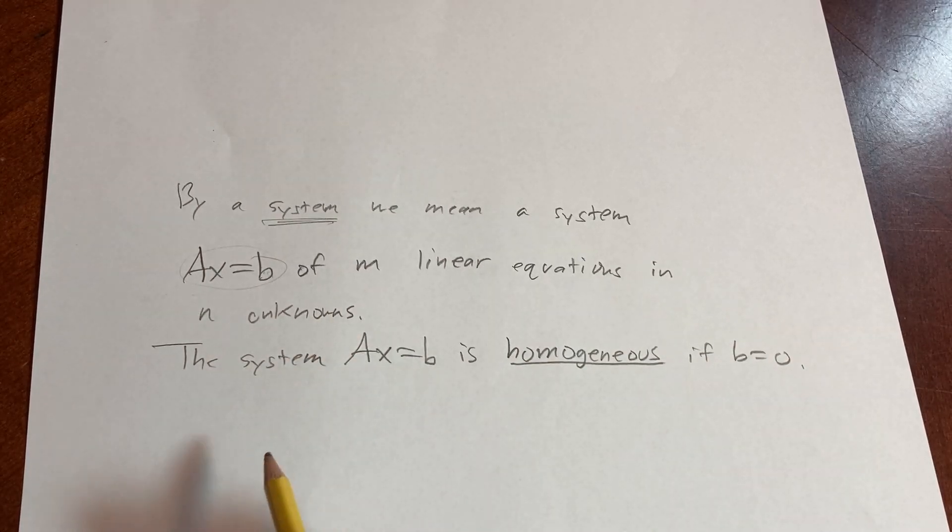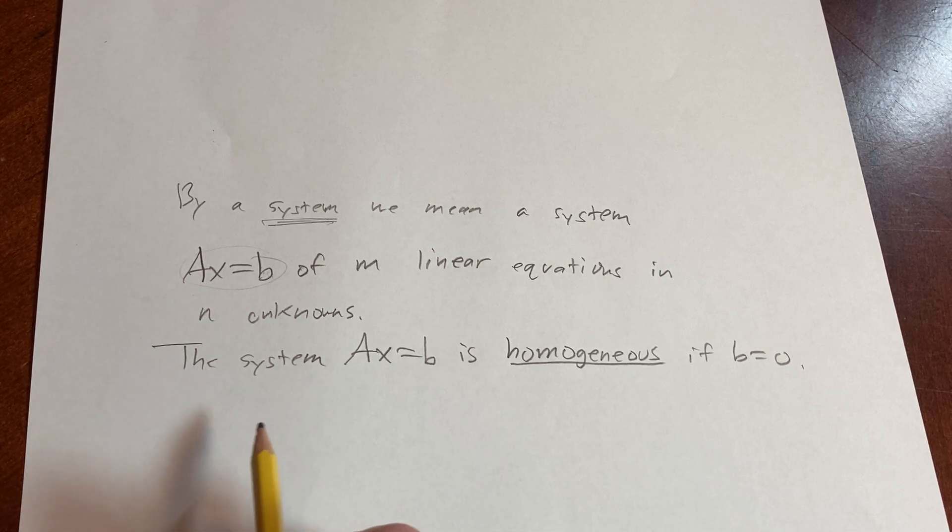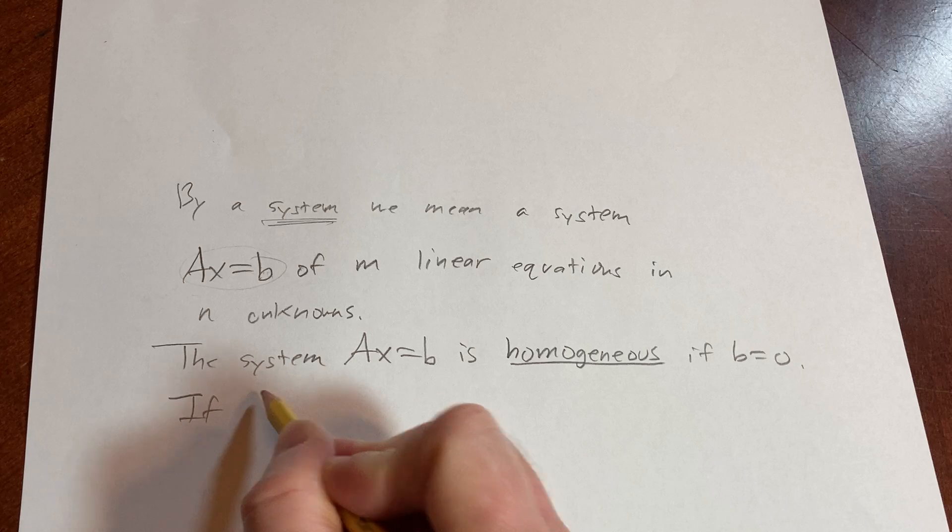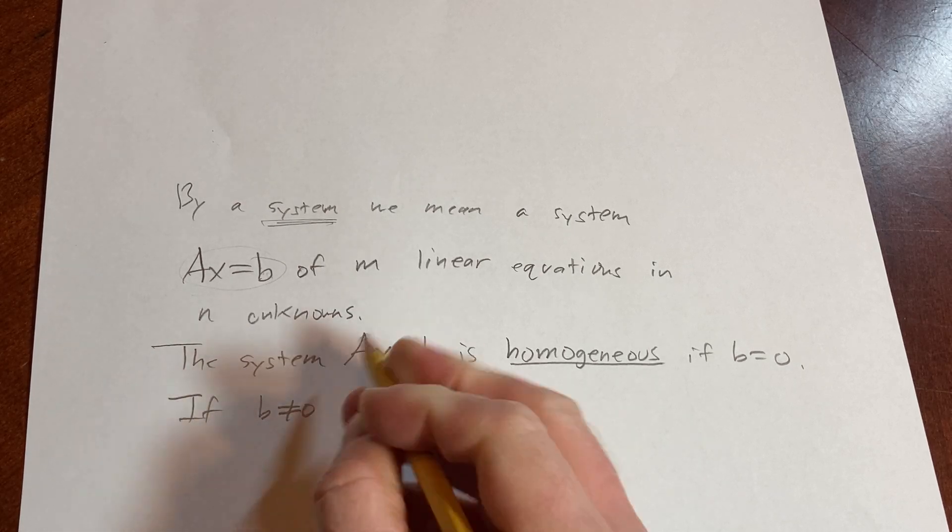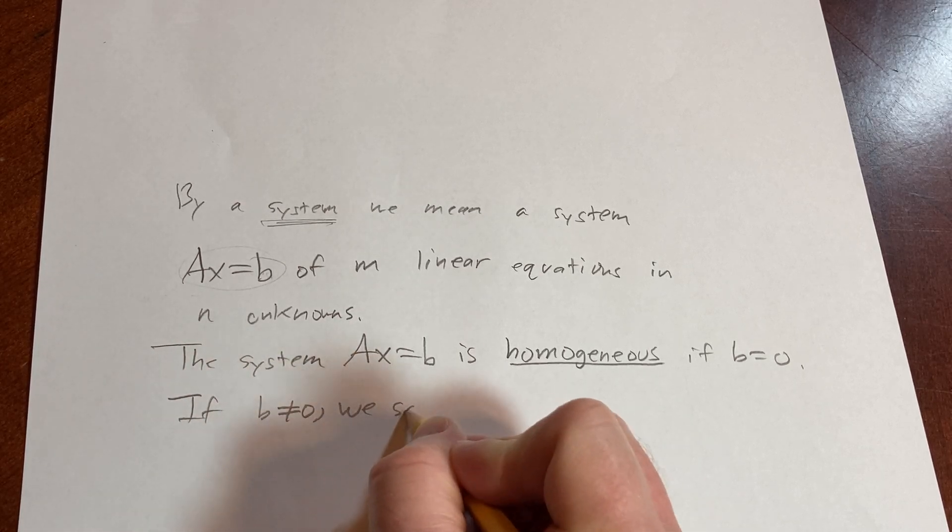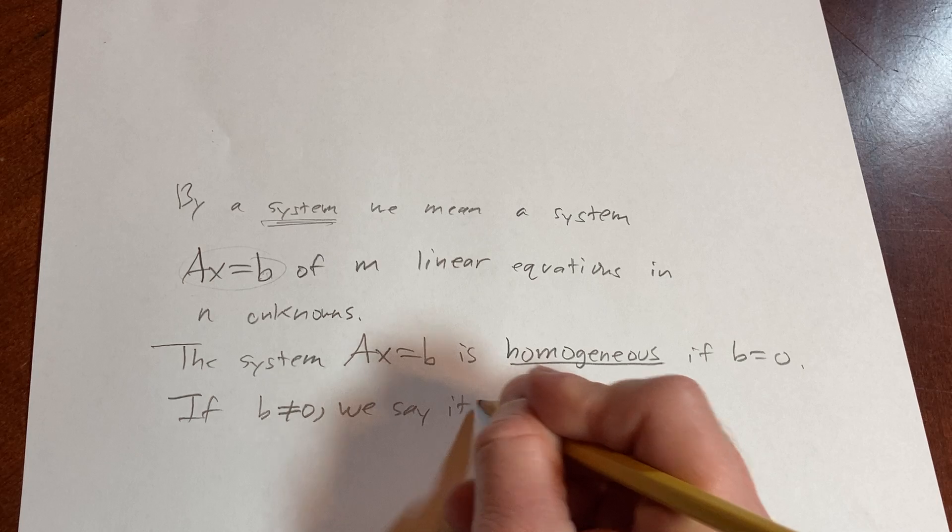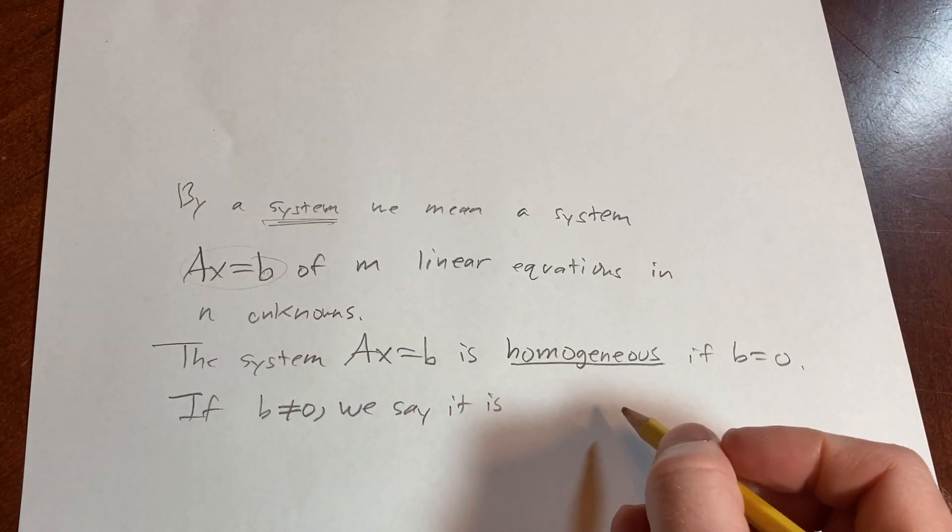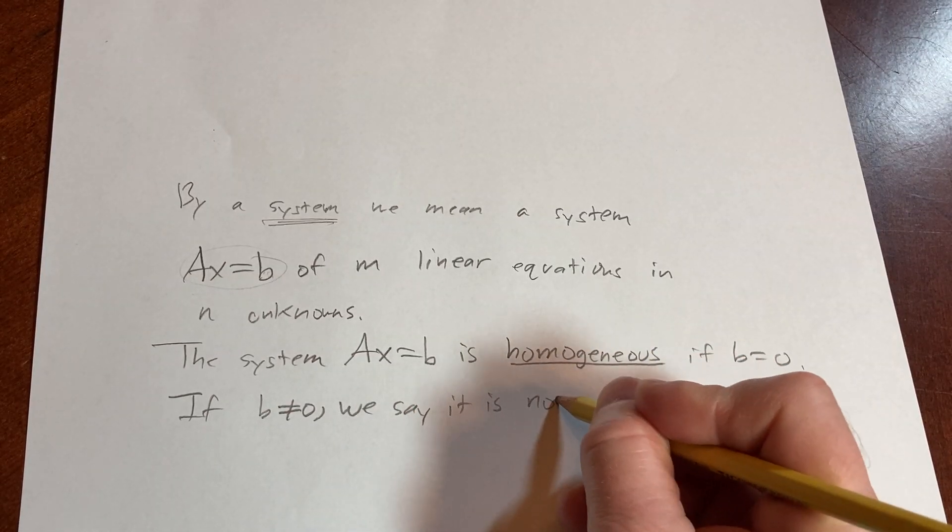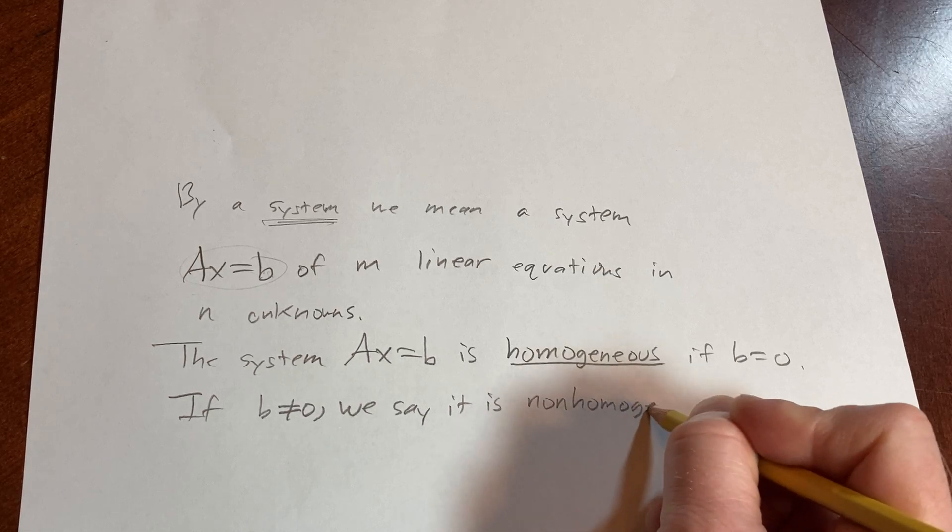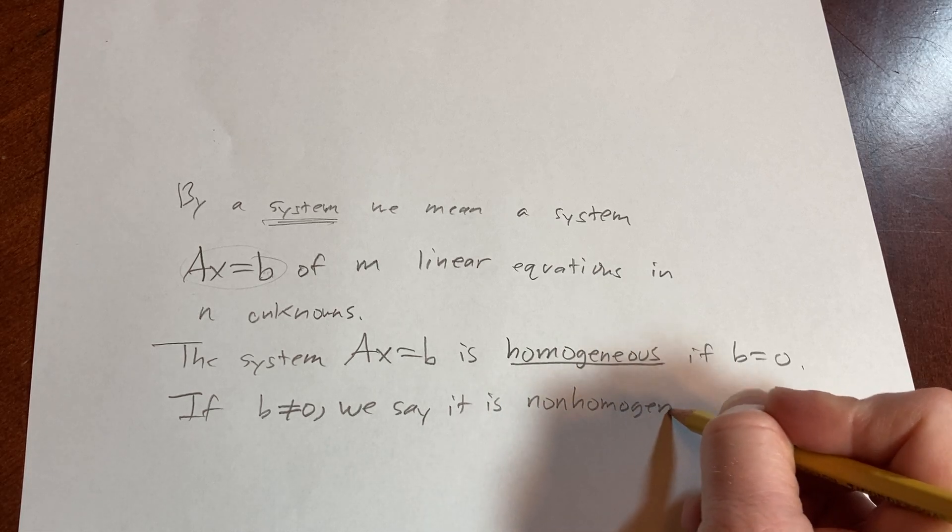If B is equal to zero, we say it's a homogeneous system. If B is not equal to zero, it is non-homogeneous.